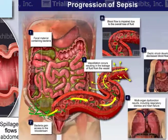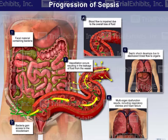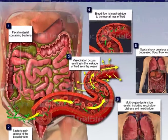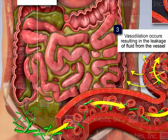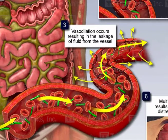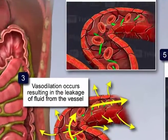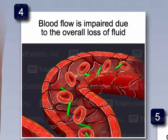In the second exhibit, we illustrate the progression of systemic sepsis. We first show the fecal material spread throughout the abdomen, and show how the bacteria gain access to the circulatory system. Once the bacteria gain access to the bloodstream, vasodilation occurs, resulting in a leakage of fluid from the vessel. We then show how blood flow is impaired due to the overall loss of fluid within the vessels.